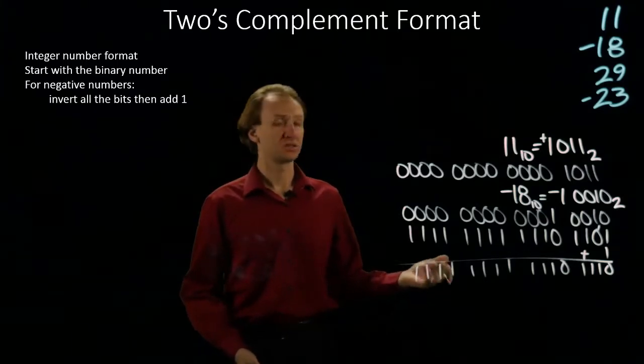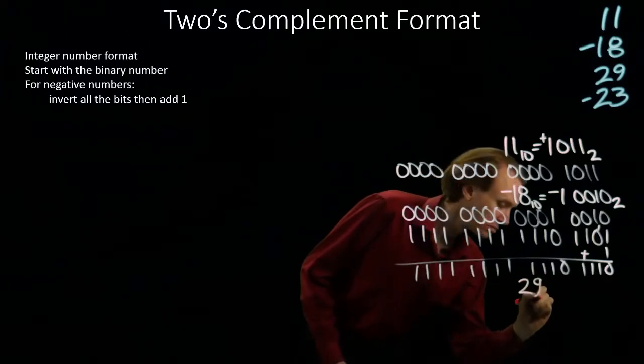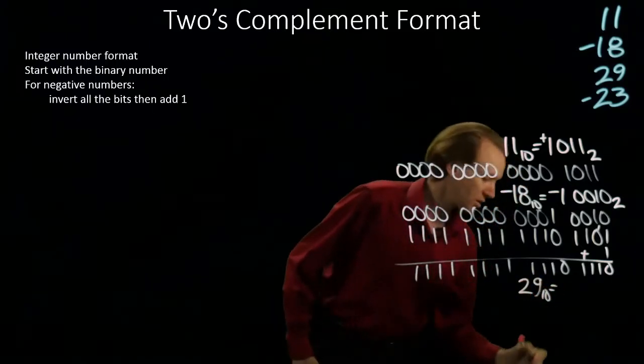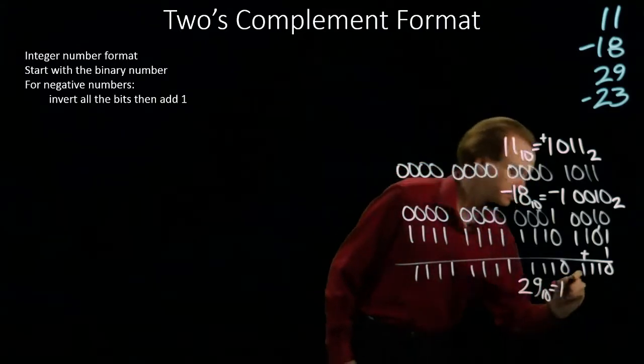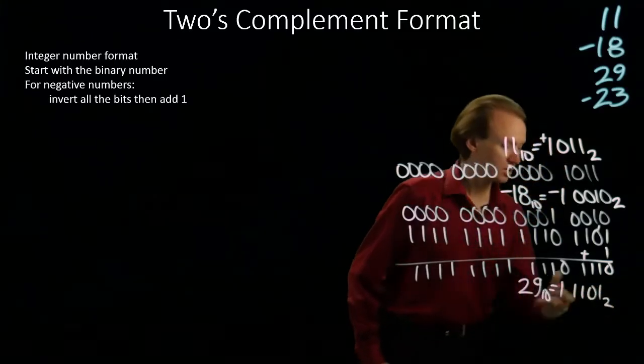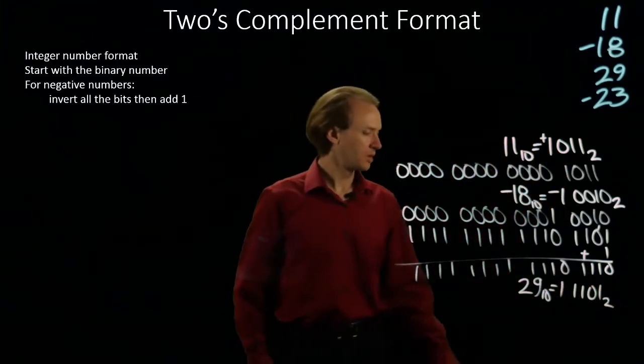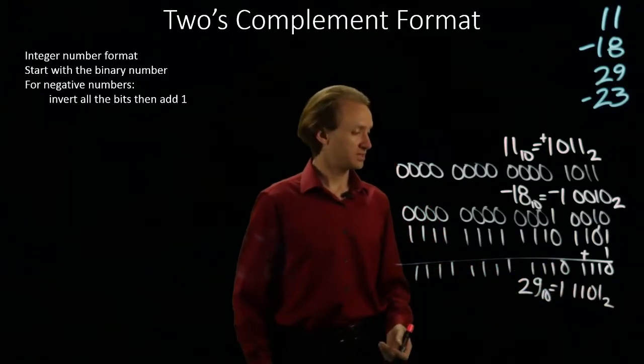My third number is 29. So 29 is 16 plus 13, and this is a positive number. I'll start by writing out my number with 16 bits,